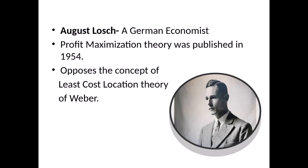August Losch is a German economist. He propounded this theory in 1954. He opposed the concept of the least cost location theory by Weber, saying that Weber gave more importance to transportation and labor cost. But here, in this profit maximization theory,